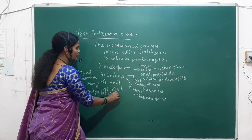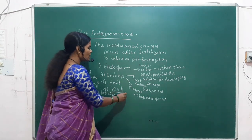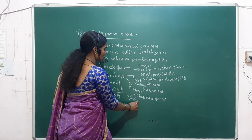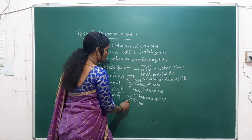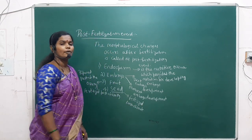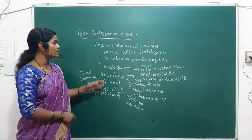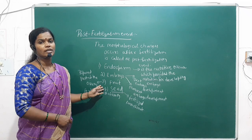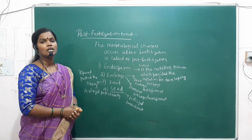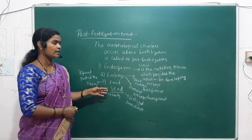We will see fruit in detail later. The fourth step is the seed. Seed is the fertilized part of the ovary — or the ripened part of the ovary. So these are the four events in the post-fertilization structure: endosperm, embryo, fruit, and seed.